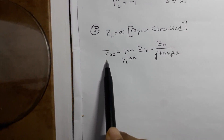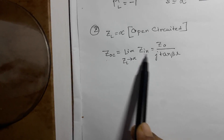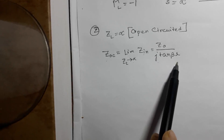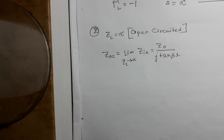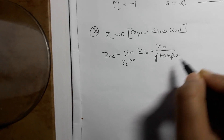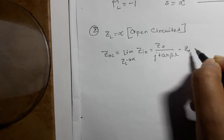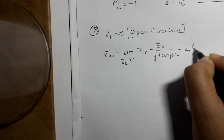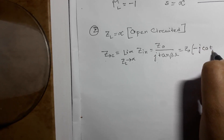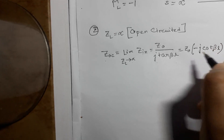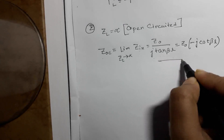Zoc means open-circuited impedance. When ZL tends to infinity, Z will be Z0 divided by j tan(βL). From equation number 11, this gives Zoc equal to Z0 times (-j cot βL), and that is equation number 18.